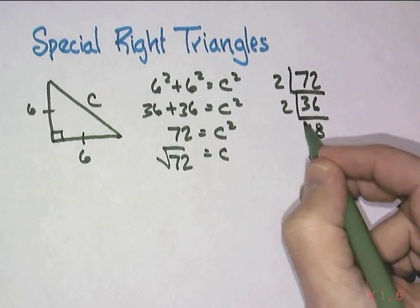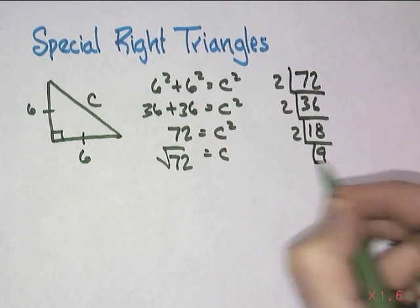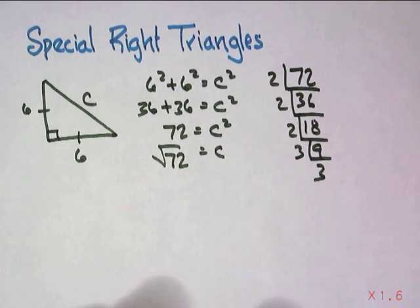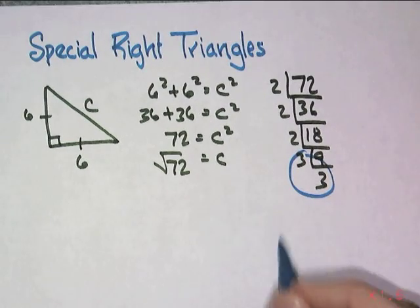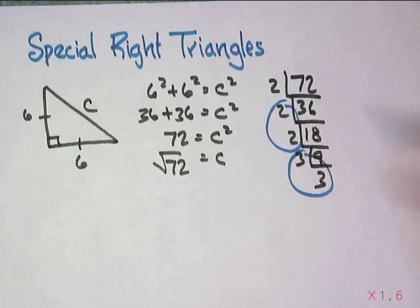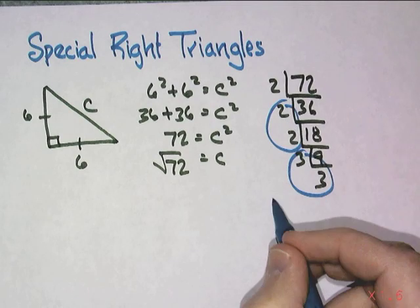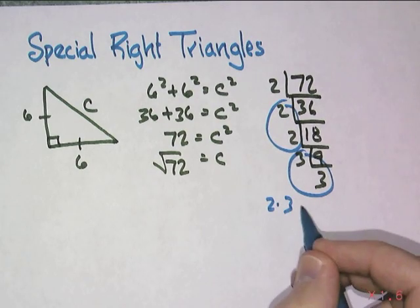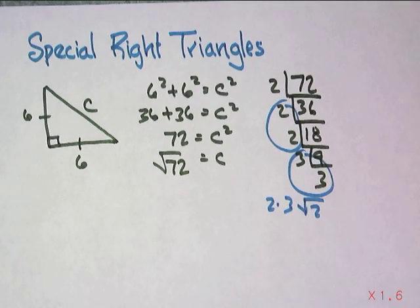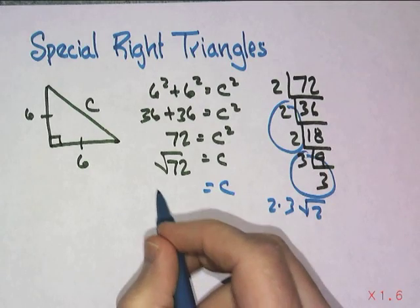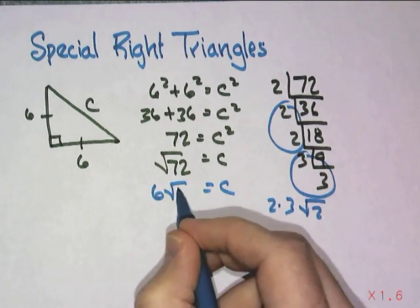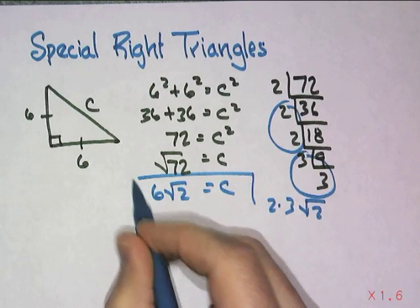If you want to continue on, 18, 2, 9, 3, 3. And if I'm doing the jailbreak, I would say that these two would break out and these two. And that one would be left in, leaving me with 2 times 3 square root of 2. So c is equal to 6 square root of 2, and that's the simplified answer.